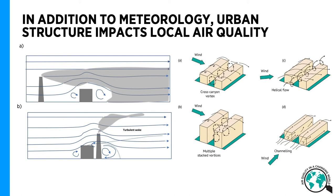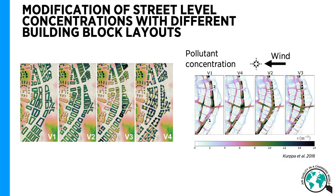These are a few idealized examples of how the urban form or urban structure can impact the flow fields, and furthermore, the pollutant concentrations. Here you can see a study where the interest was to understand what kind of building block layout is most optimal for street level air quality in a boulevard type street canyon.